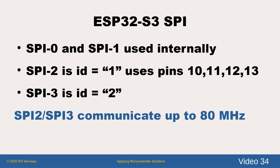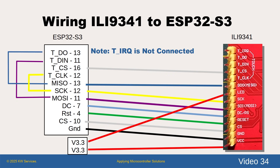Please notice that SPI 2 uses pins 10, 11, 12, and 13. I present the wiring on the next two slides. Besides the four SPI pins, we need two control pins. Here I'm using pin 4 for reset and pin 7 for the data command or DC.